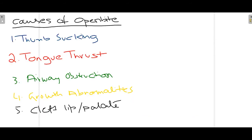The main causes of OpenBite include thumb sucking and tongue thrusting. Thumb sucking leads to OpenBite by hindering the eruption of the incisors — the thumb disrupts eruption of the anterior teeth, leading to OpenBite. Tongue thrust works in a similar manner, preventing the eruption of the teeth either anteriorly or posteriorly, leading to OpenBite.